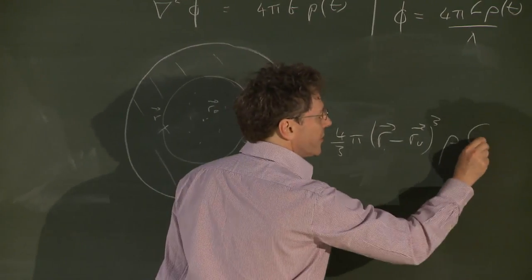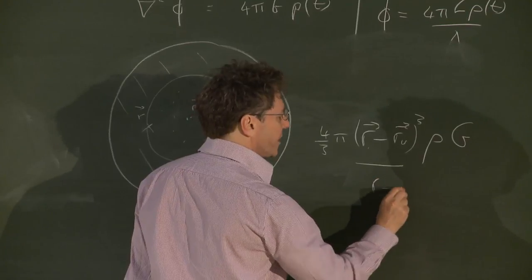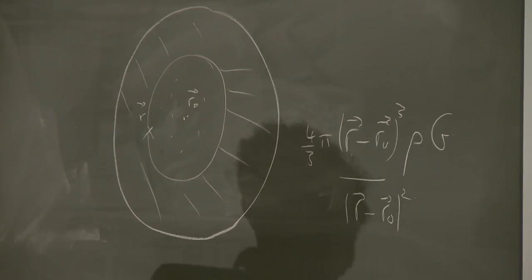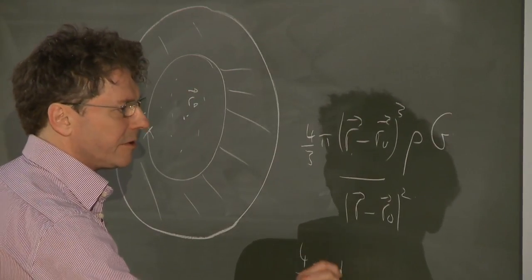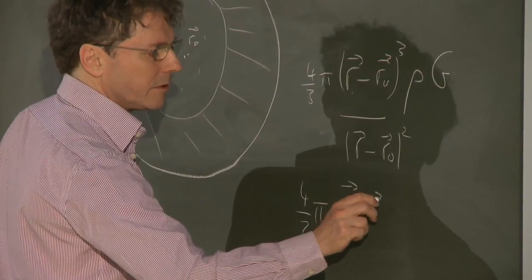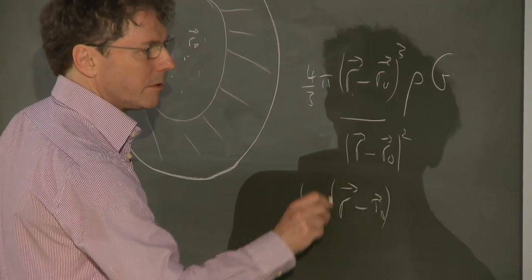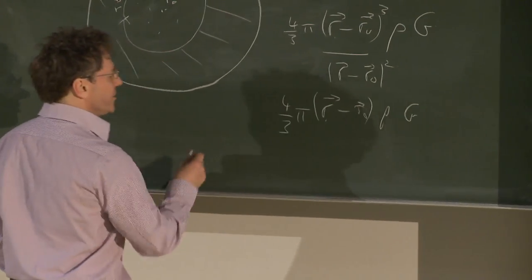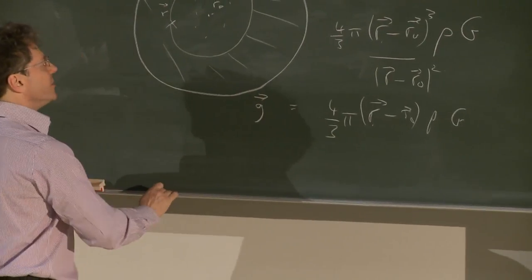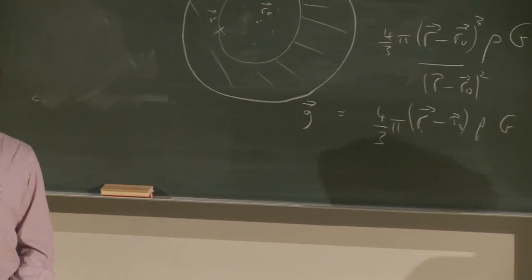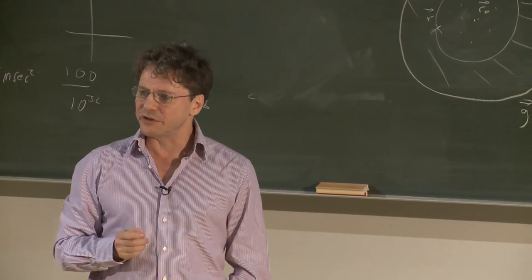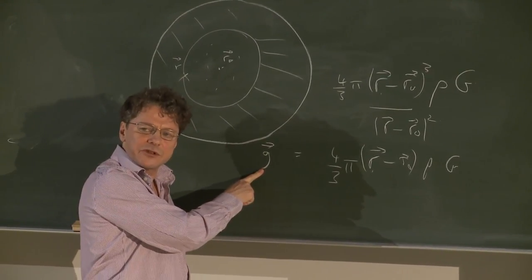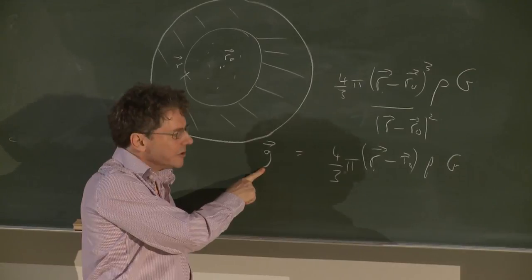The mass distribution here will just be 4/3 pi r minus R0 cubed times the density. And we want to have the gravitational force, so we have to divide this by this quantity. I've already written it down. So this is the expression that we end up with for the effective gravitational acceleration at this point. And I said that this is a large universe. It's a very large universe. How large does it have to be before this thing completely swamps the acceleration acting on the surface of the Earth?